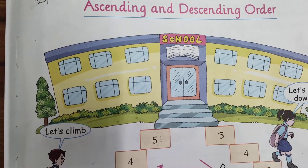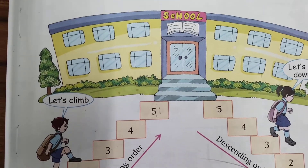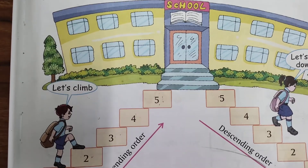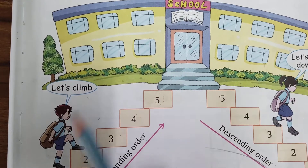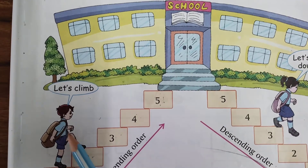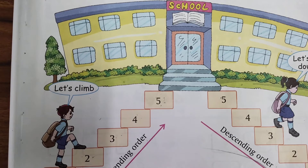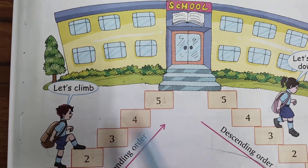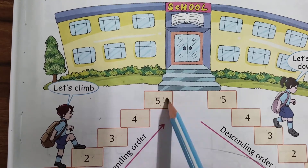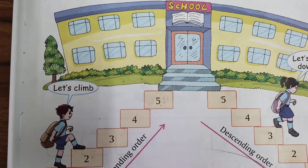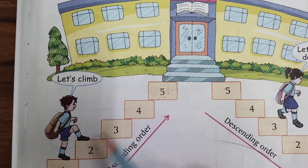Let's see one example for this concept. Here, given a school staircase. One boy said let's climb — at that level, aath level.